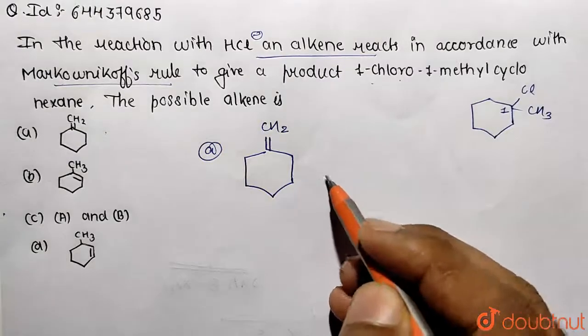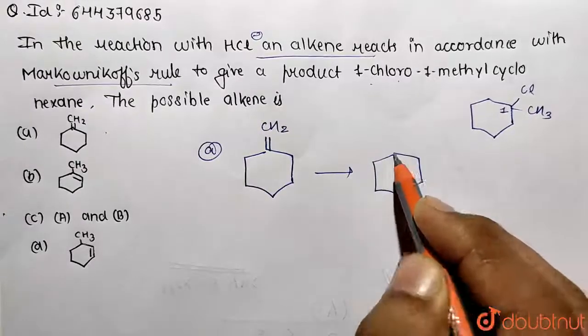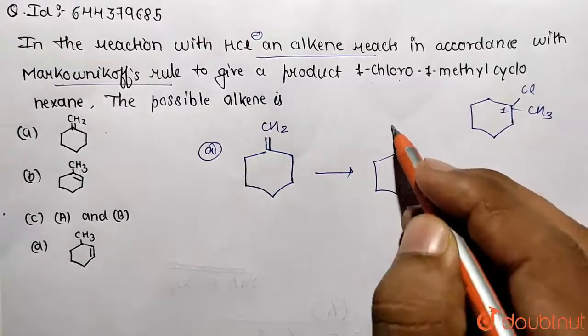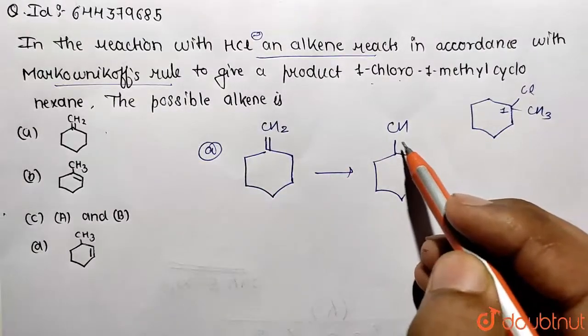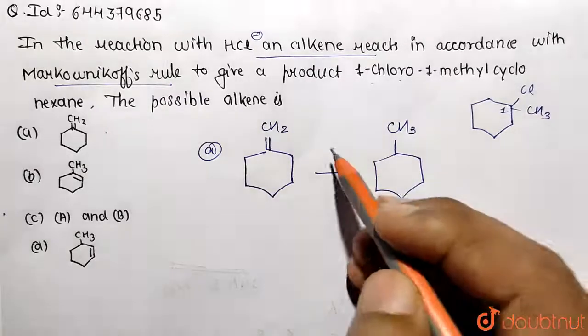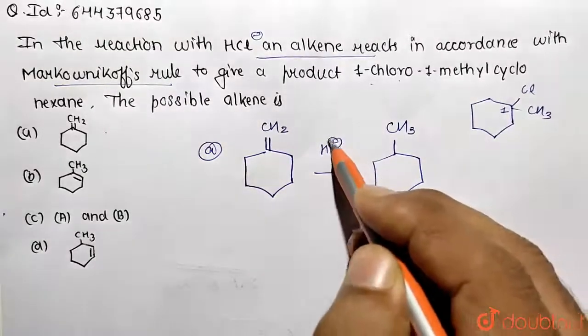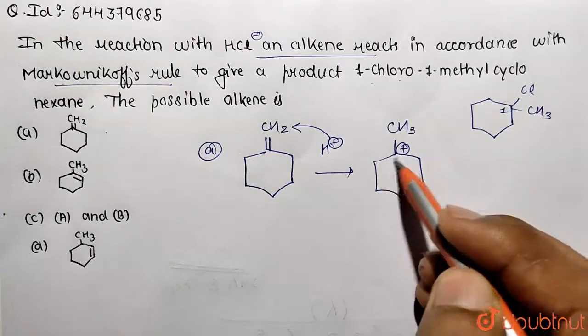First, carbocation formation will take place. The attack will occur where carbocation will be formed. This is going to be CH3 because H will be attacking this corresponding position. H+ will be attacking on this one and carbocation will be formed over here. This is a stabilized carbocation by three substituent groups.